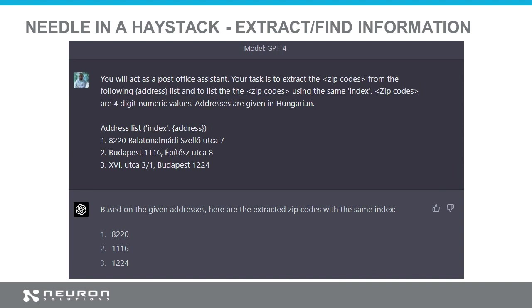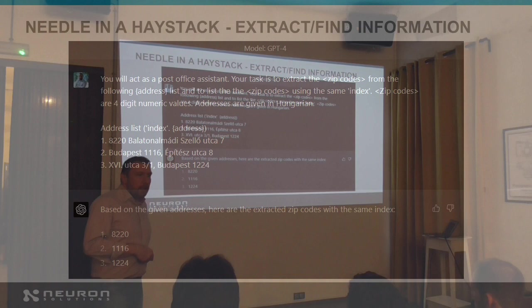Here, I asked the model to extract the zip code from addresses. Without specifying where the zip code is — in some cases it's at the beginning, some cases in the middle, some cases at the back — I just told the model that all this is given in Hungarian and these are four-digit numeric values.